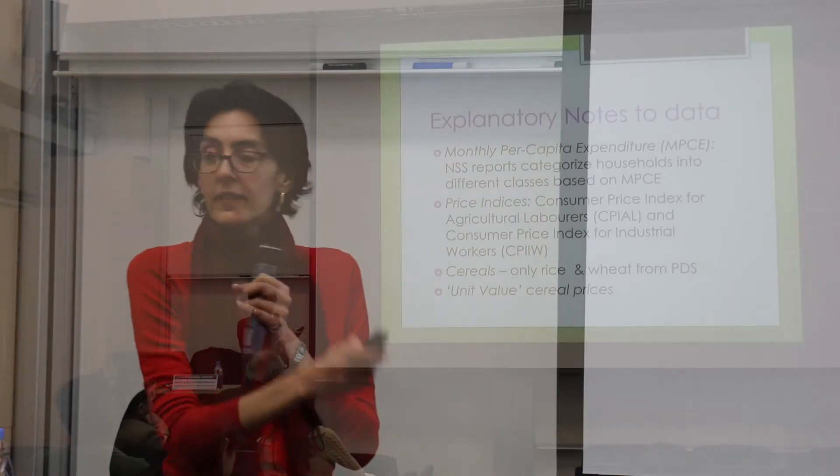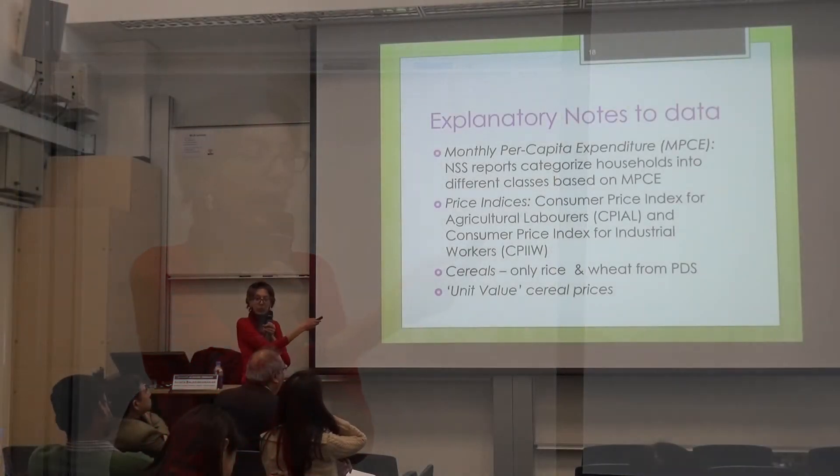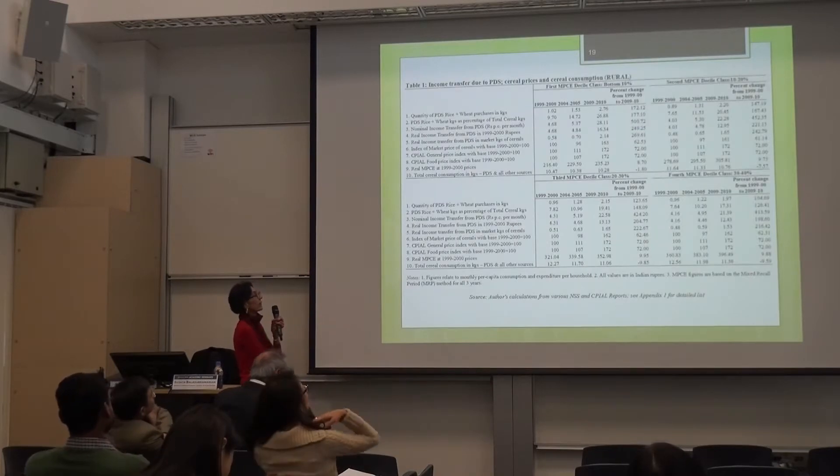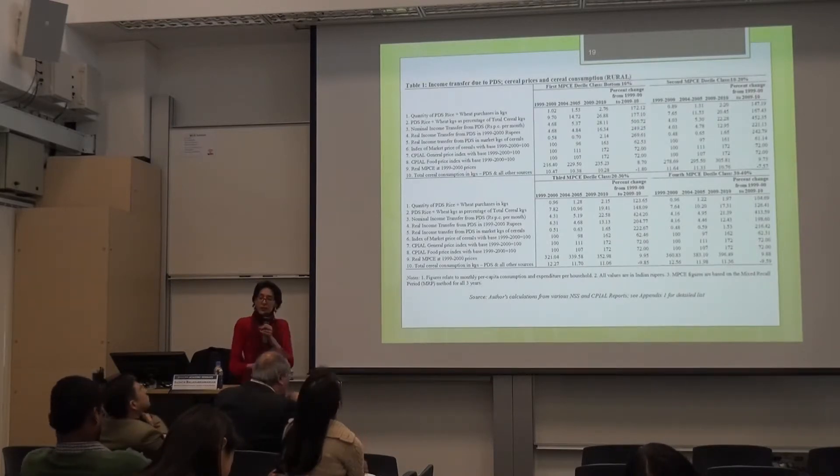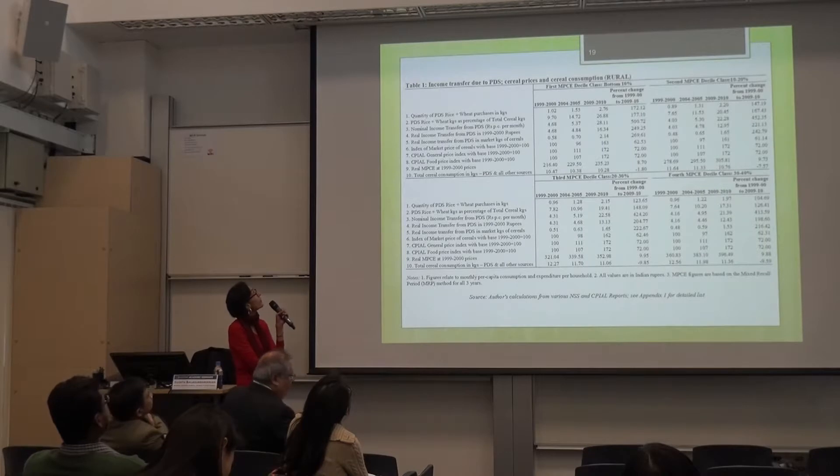All of the prices I've used are unit values. The reports give you, for households, a value in rupees and a quantity in kgs of rice purchases. If you divide the value by the quantity, you get the average price paid by the household. So these are not market survey prices — there are no cereal price indices which go back in India for the duration I'm looking at. The data is split into rural and urban, and I'm showing you the rural figures first.